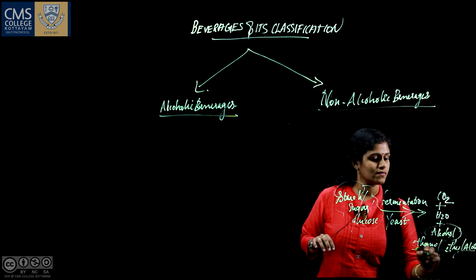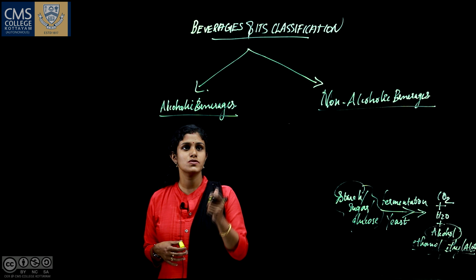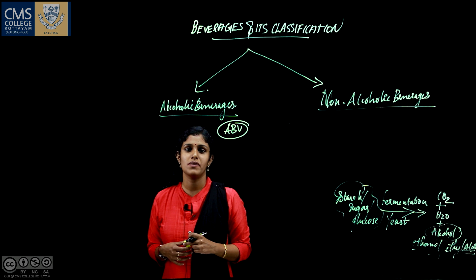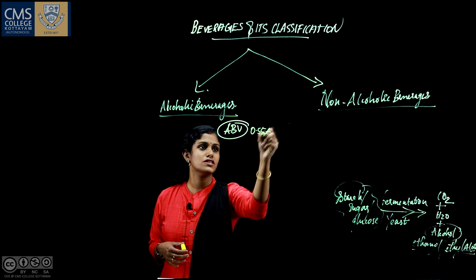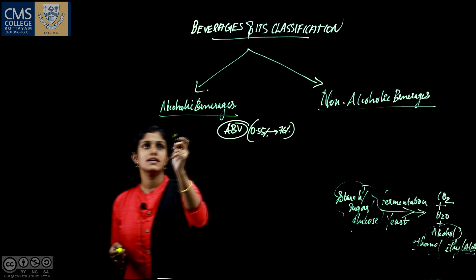The alcoholic content of beverages is expressed in terms of ABV, which is nothing but alcohol by volume. The ABV values of alcoholic beverages can range from 0.55% to 76%, and it should not exceed more than 76%.